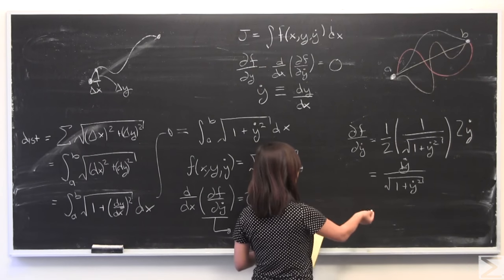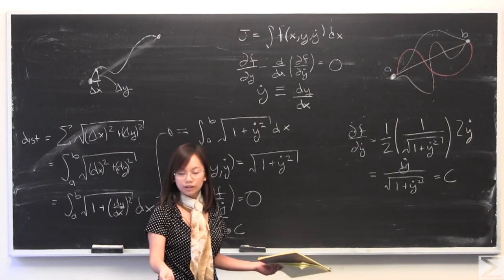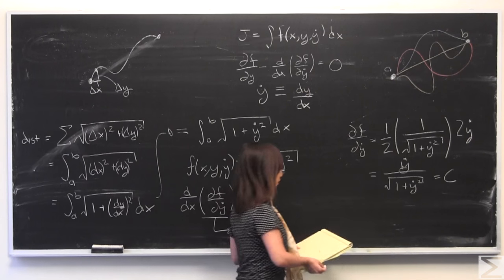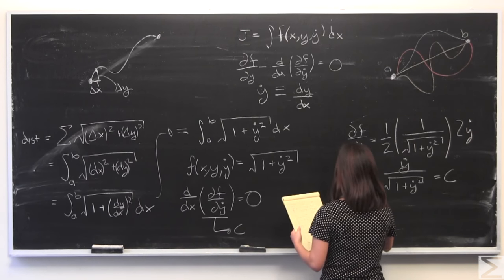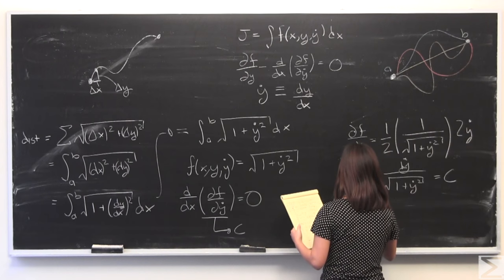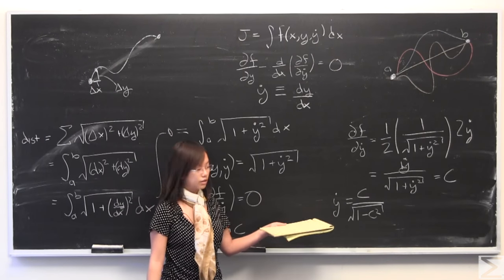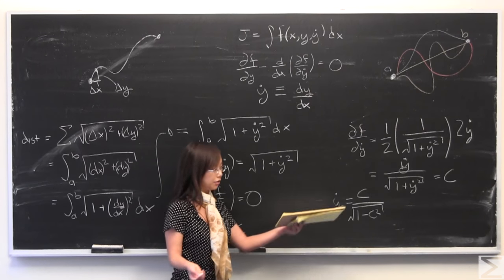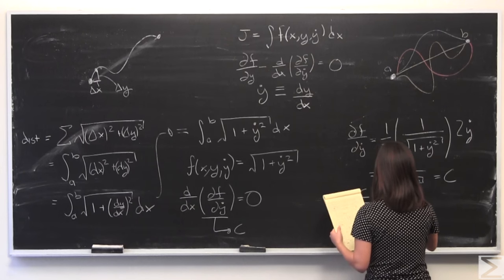OK, so now we've solved for this. We can set that equal to this constant c. And I'm going to skip the algebra on this, but I am going to solve for y dot. And if you do that, you'll get y dot is equal to c divided by the square root of 1 minus c squared. If you accept that c is a constant, then obviously this also has to be a constant. I'm going to arbitrarily name that m.